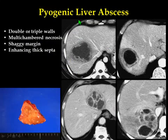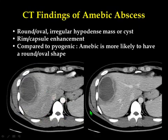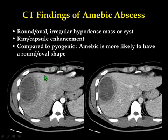What about liver abscess? Sometimes liver abscess looks like cysts, but in fact the wall consists of double or triple layers with multiple chambers. The margin is markedly irregular with enhancing septum. This is another case of amoebic abscess — fairly smooth, but with two layers and a cystic interior.